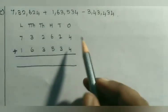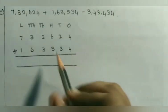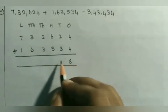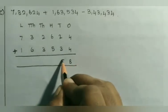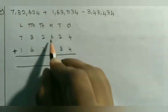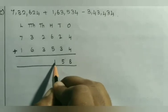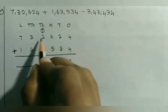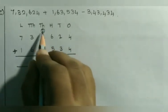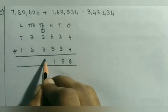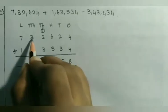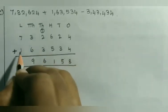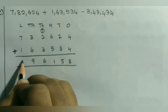Let us find the sum. 4 plus 4 is 8, 2 plus 3 is 5, 6 plus 5 is 11 — 1 goes to the carryover. 2 plus 3 is 5, plus 1 carry is 6. 3 plus 6 is 9. 7 plus 1 is 8.